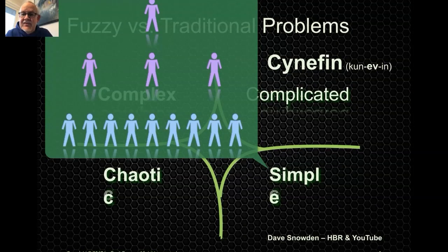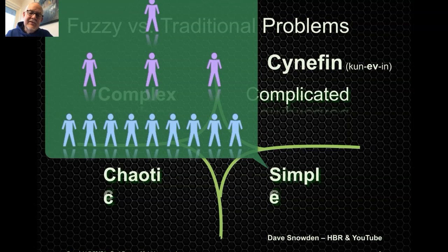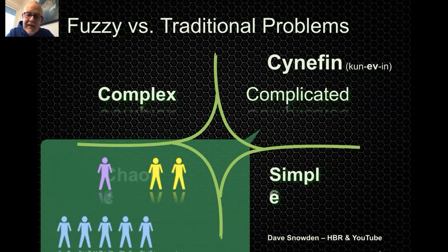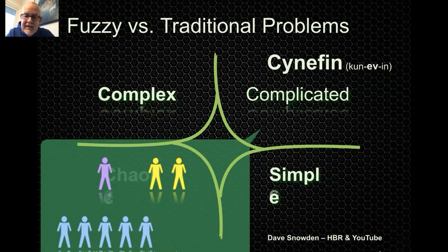For a simple problem, very traditional organization structures work really well — the manager tells people what to do, trying to make them work faster with fewer errors. A call center would be a perfectly good structure for that. For complicated problems, you need experts who understand the domain. Experts are expensive, so you put a team together to do what the expert tells you. This describes traditional Agile quite well, where experts prioritize the stories and the team delivers them. That's a structure I use quite a bit.